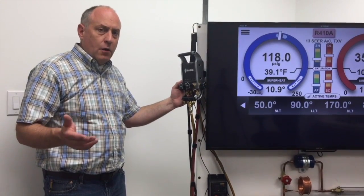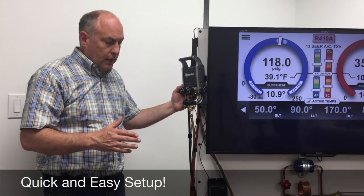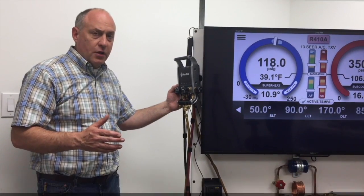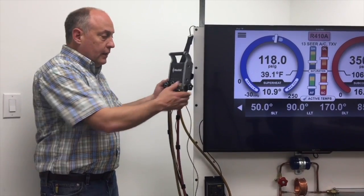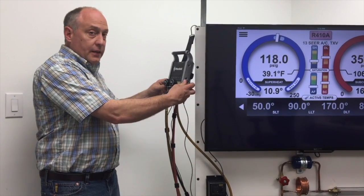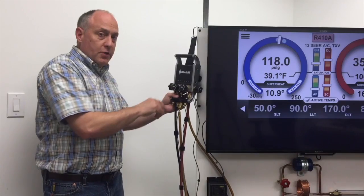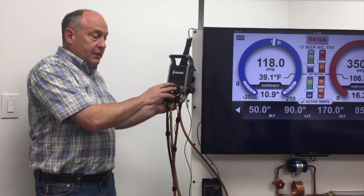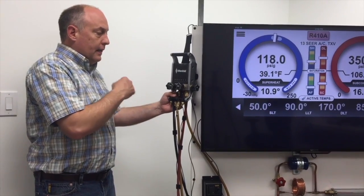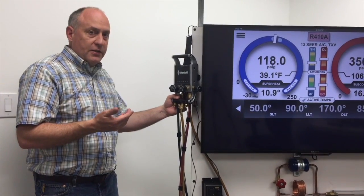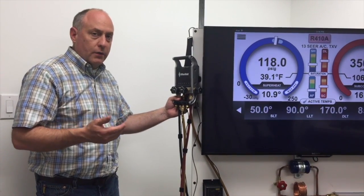So now that we have the low and high side connected, our liquid line and suction line temperature sensors on, the only other thing we need to do is turn on the Imanifold to get things going. Just like a standard manifold set, the gauge ports are all closed when we're measuring pressures. The only time you open these up is when you're adding or removing refrigerant. We're going to take you through the next commissioning process in another video and walk you through the process.